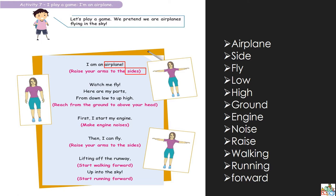On va continuer — watch me fly. Allons lire ensemble: watch me fly. What are you going to do? You're going to fly by doing like this. Here are my parts, from down low to up high. Down veut dire bas, up veut dire haut — on va partir au bas et ensuite on va partir en haut. So reach from the ground to above your head.